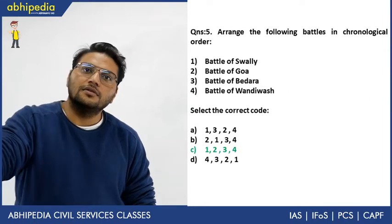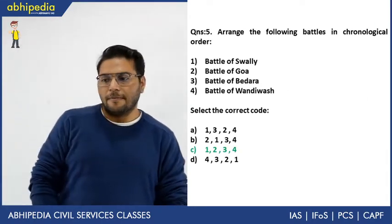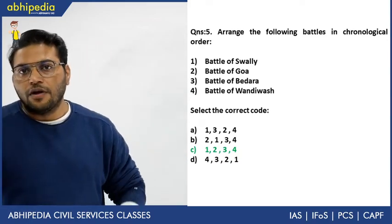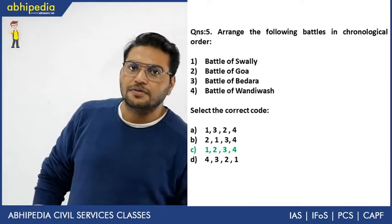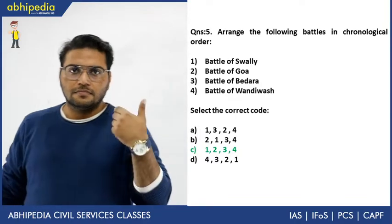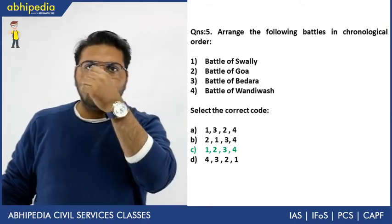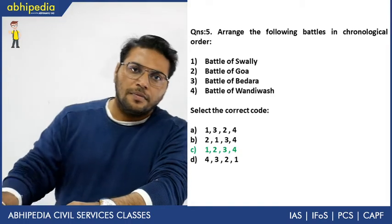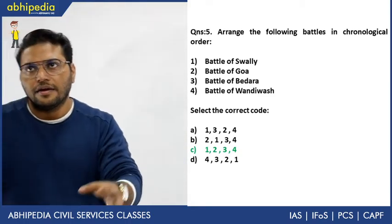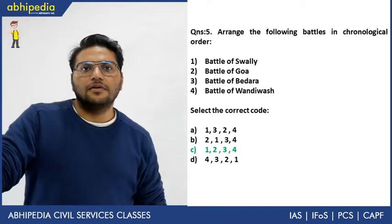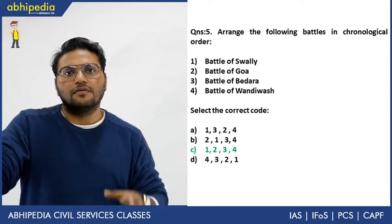The correct chronological order is 1, 2, 3, and 4. Remember: Swally — English vs Portuguese; Goa — Portuguese vs Dutch; Bidara — English vs Dutch; Wandiwash — English vs French. You must know which powers fought in each battle.